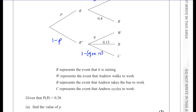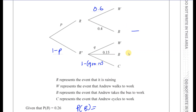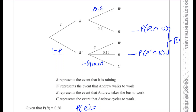It's given that the probability of B — the probability that Andrew takes the bus to work — is 0.26. Find the value of P. The probability of B is a combination of two outcomes: the probability that it rains and then the probability that he takes the bus given that it rains, and the probability that it doesn't rain and then the probability that he takes the bus given that it doesn't rain.